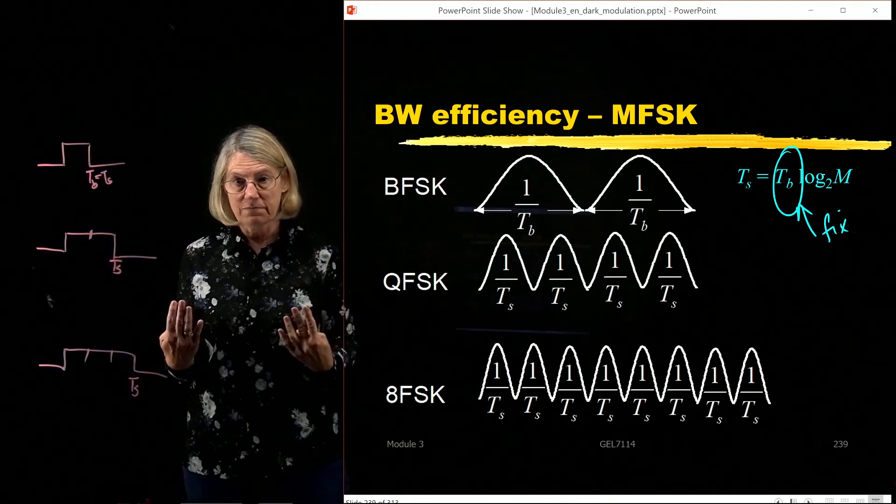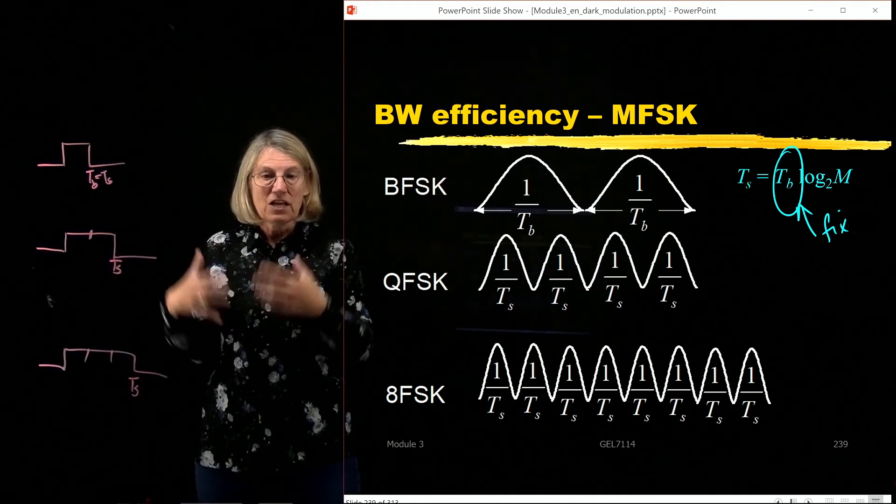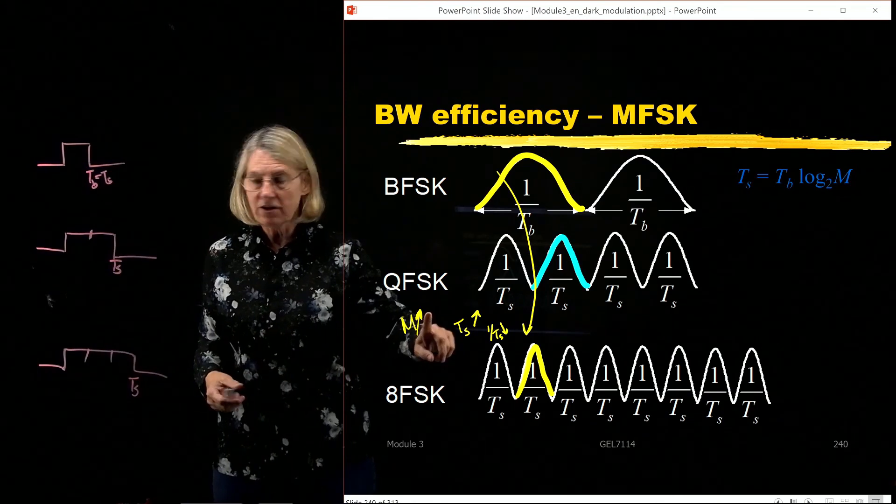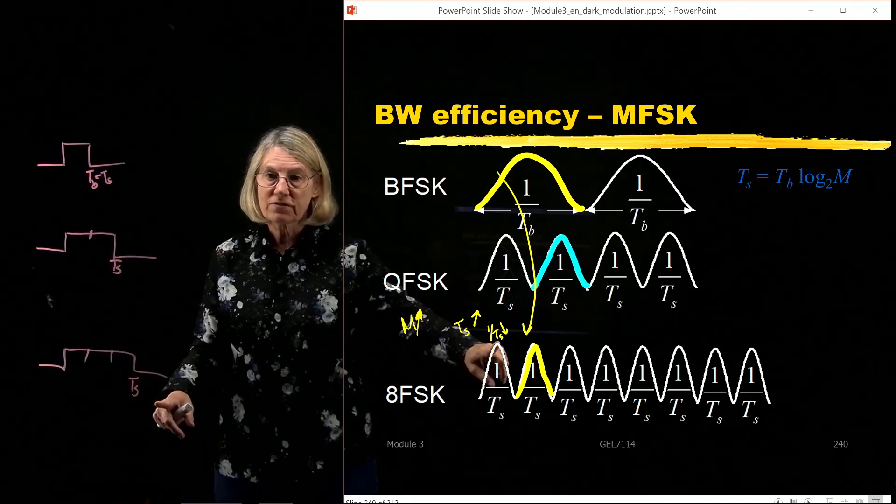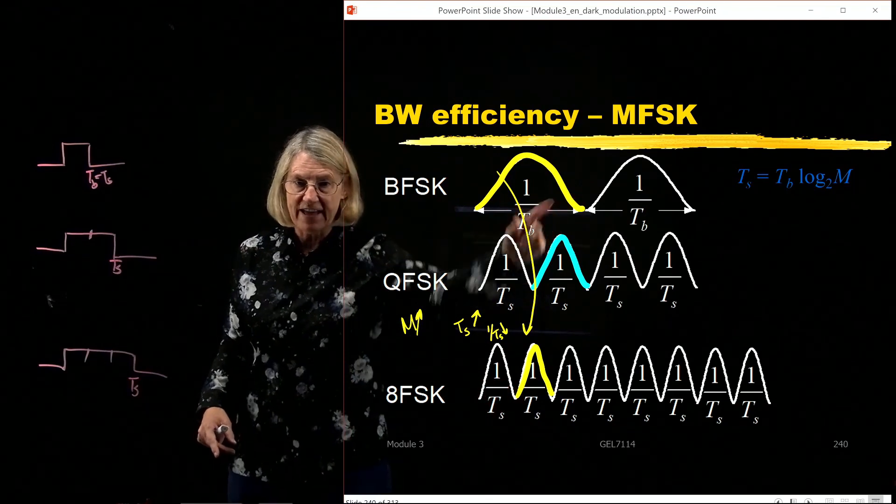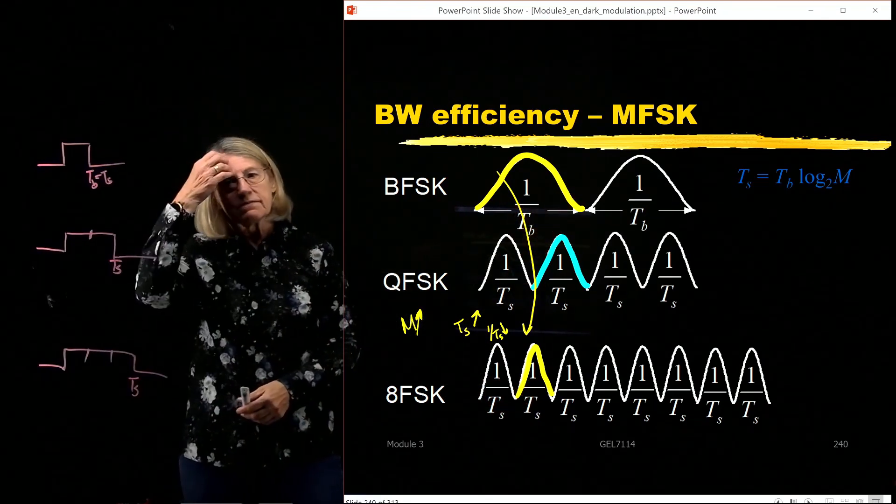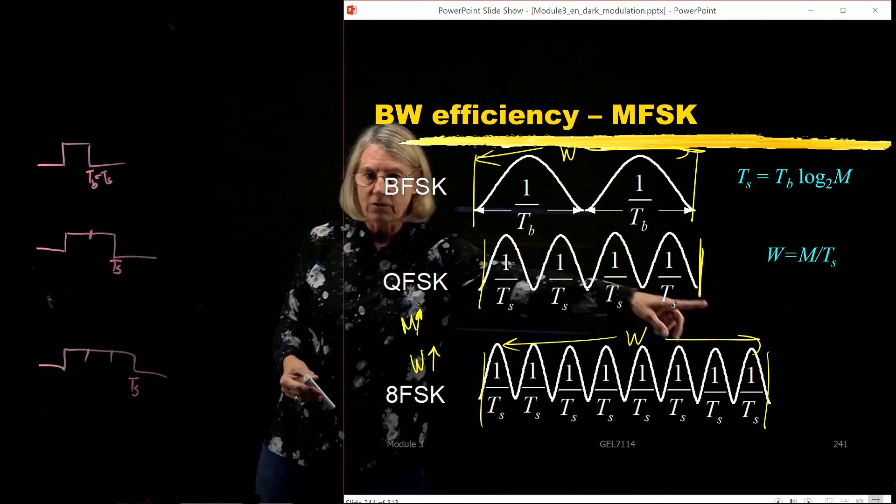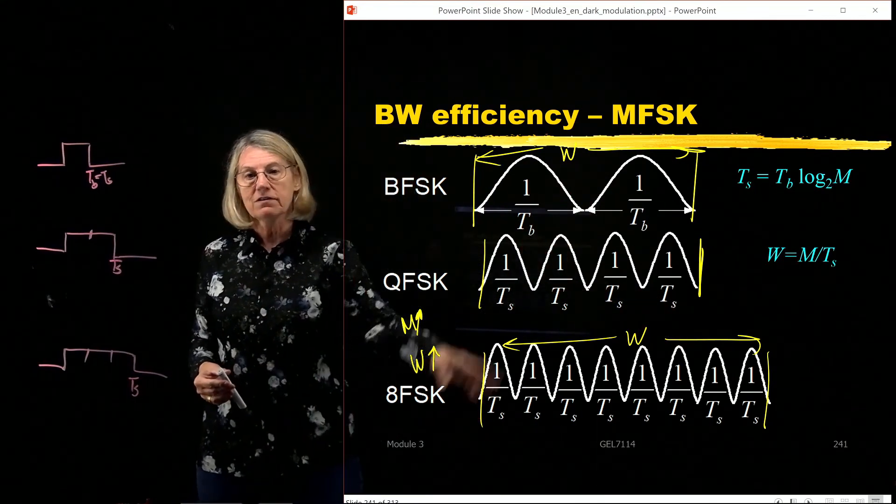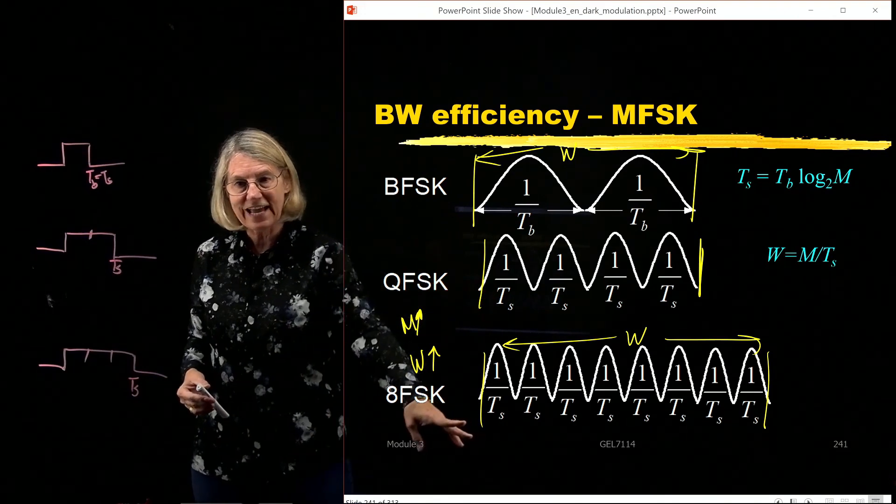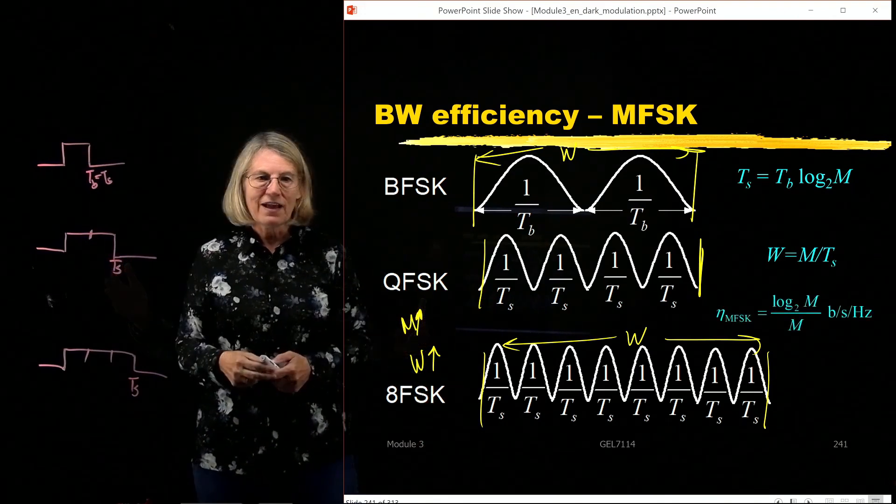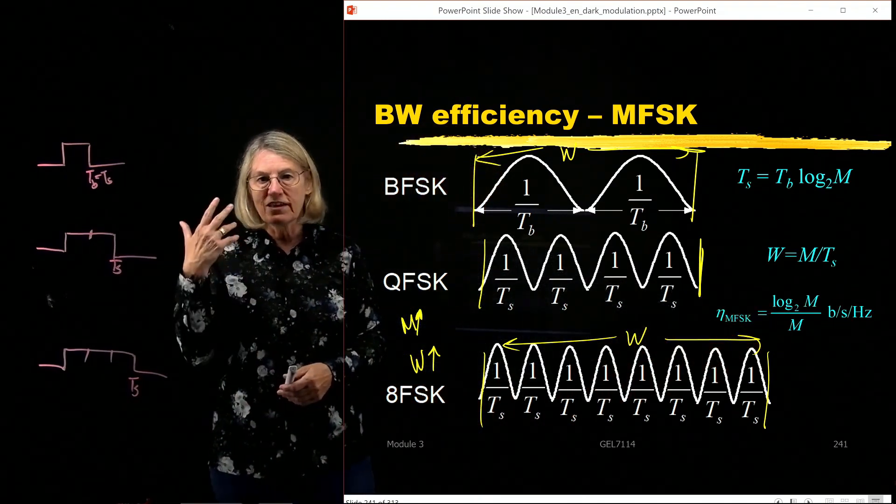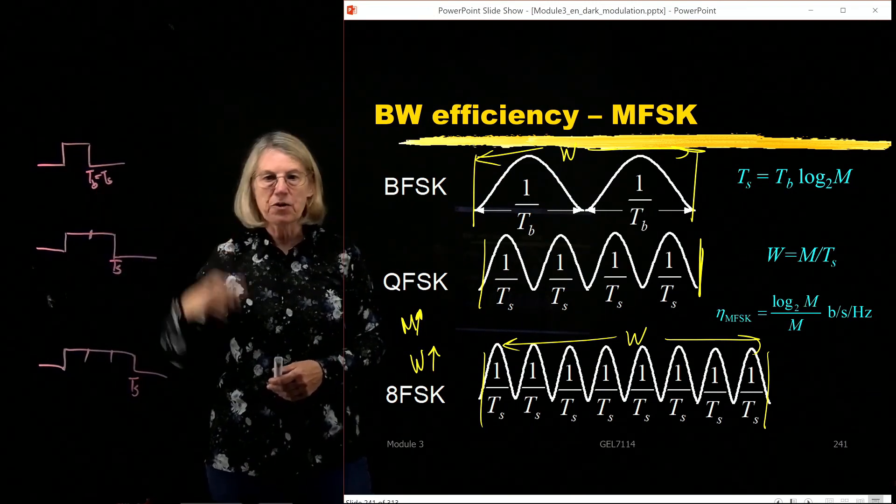So now we can see this idea of logarithmic and linear, because as we go on, M is getting bigger, the symbol time is getting bigger, 1 over the Ts is getting smaller. So I went from fat, and I went down to thinner. But, of course, I have to multiply them, so the total occupied bandwidth is, of course, getting bigger. It looks the same at QFSK, but once I get to 8FSK, the occupied bandwidth is getting bigger. And so that is why we get log 2M over M for the FSK noncoherent case.